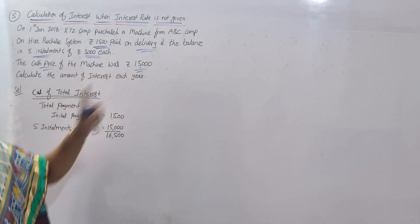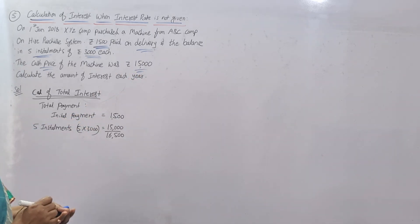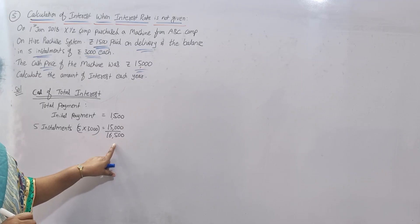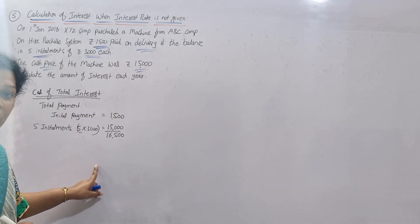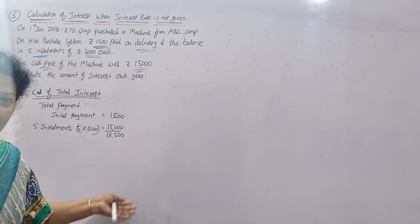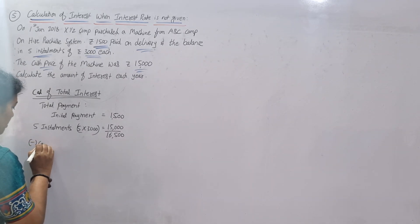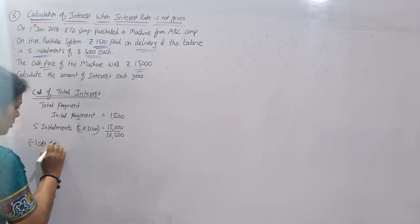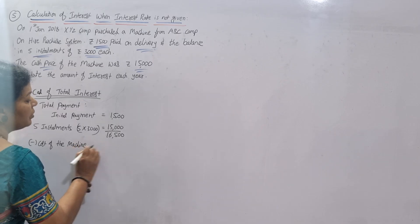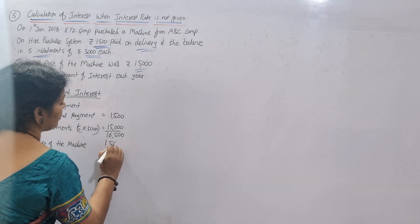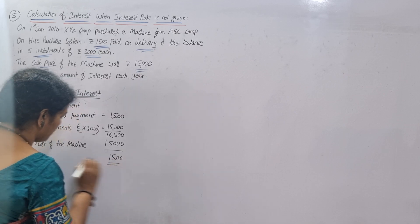The cost of the machine is ₹15,000, but we are paying ₹16,500. The difference is the interest. So total interest equals total payment minus cost of machine: ₹16,500 minus ₹15,000 equals ₹1,500. That is the total interest.